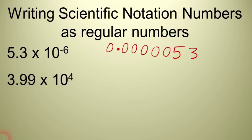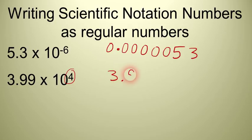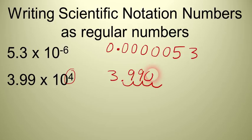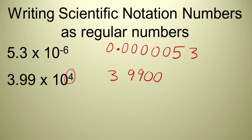Let's try the next example: 3.99 times 10 to the 4th. It's a positive exponent, so it's a big number. We move the decimal point to the right 4 places: 1, 2, 3, 4, and we need some placeholder zeros there. The answer is 39,900.